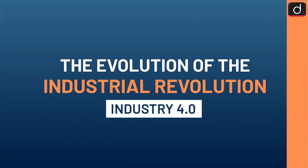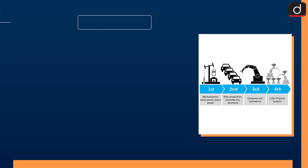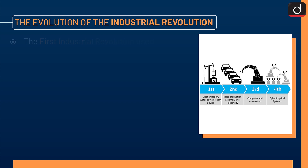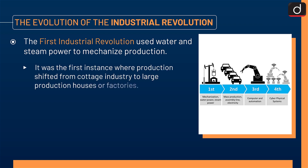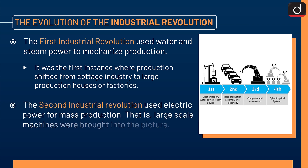Now let's discuss the evolution of the industrial revolution. The first industrial revolution used water and steam power to mechanize production — it was the first instance where production shifted from cottage industry to large production houses or factories. The second industrial revolution used electric power for mass production; that is, large-scale machines were brought into the picture.